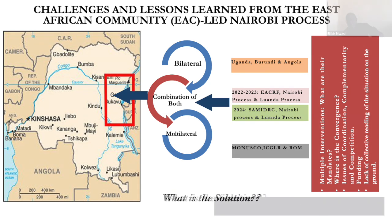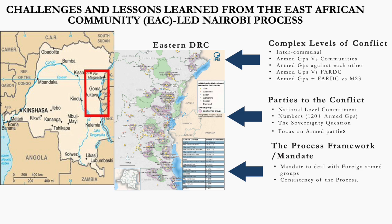Other challenges relate to the complex levels of the conflict. If we do not look at all these levels, we cannot find a lasting solution. There are armed groups at the communal level, armed groups against communities, armed groups against each other, armed groups against FARDC, and armed groups working together with FARDC to fight M-23. Understanding how to address all of this simultaneously has become a major challenge.